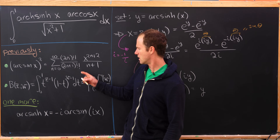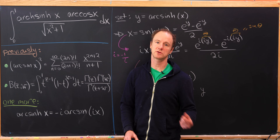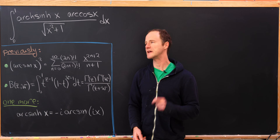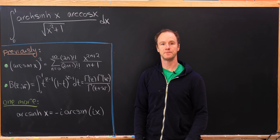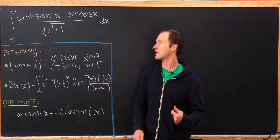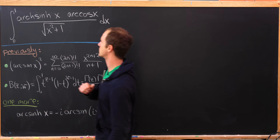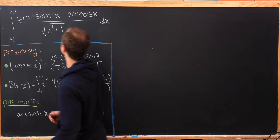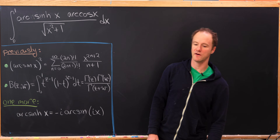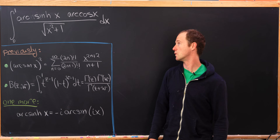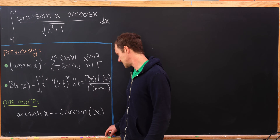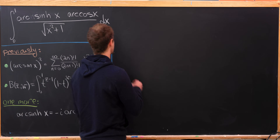Now that we've got all of our tools, we'll start to work with our goal integral. We've got the integral from 0 to 1 of the inverse hyperbolic sine function times the inverse cosine function, over the square root of x squared plus 1.